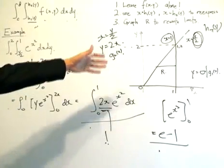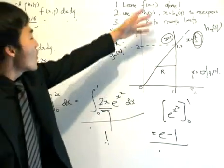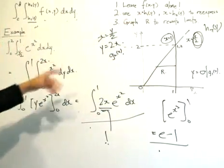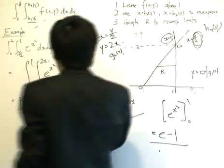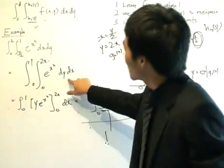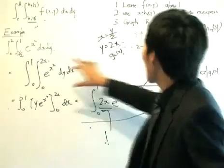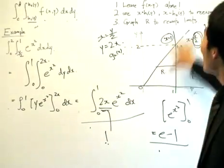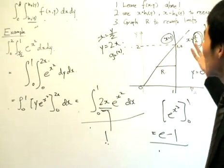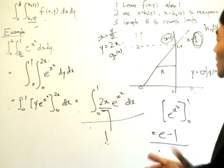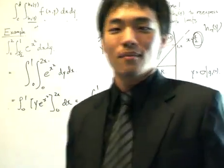So that's reversing the order of integration. Remember to graph region R so you can see what's going on. Re-express the limits carefully — since we want to partially integrate with respect to Y first, the limits need to be in terms of X, which is why we re-express the curve. Simple example, nothing much to it.